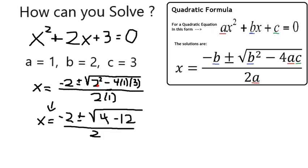If I simplify this a little bit, 2 squared is 4, and 4 times 3 is 12. So I'm actually going to get 4 minus 12 inside a radical. That's going to give me a negative. So a negative inside a radical means I'm not going to have a real solution.